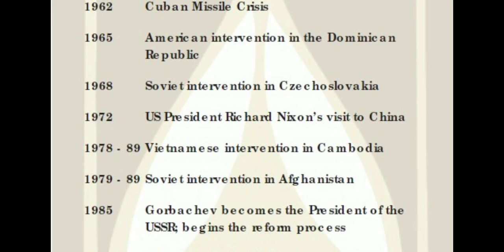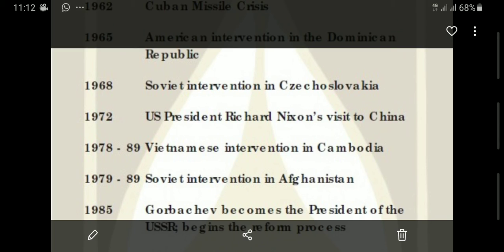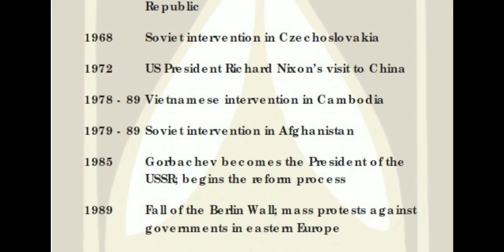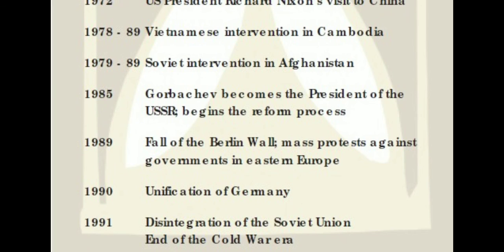1972 is quite important: the US maintained relations with China, and the US president visited China in 1972. Then there was Vietnamese intervention in Cambodia, where the rivalry between the two countries extended into Cambodia as well. In 1979, a very important year, the USSR intervened in Afghanistan.